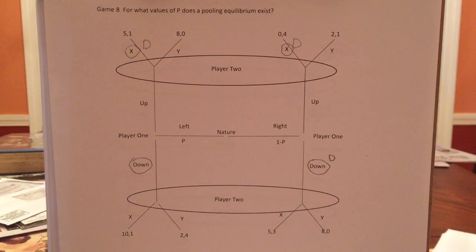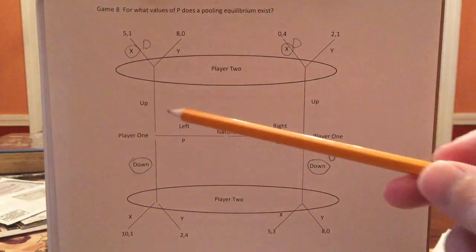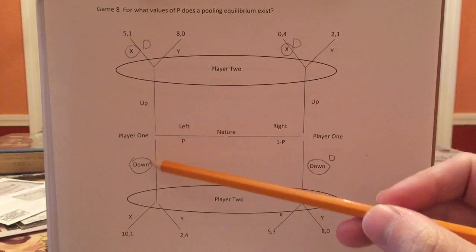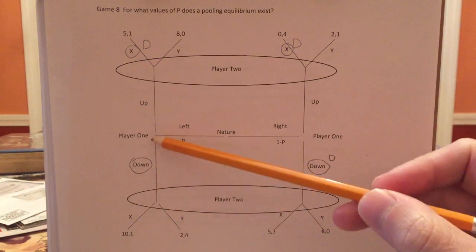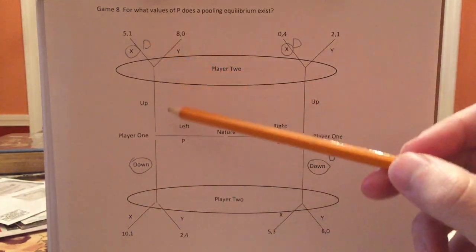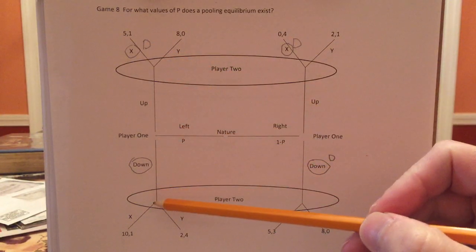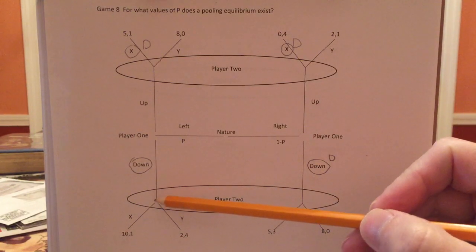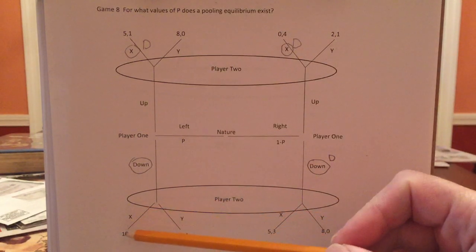Now, what else do we know has to apply to this equilibrium? Well, why is lefty willing to go down? Lefty goes up, he gets five. If lefty goes down and there's an equilibrium where lefty goes down, he better be getting 10, right?